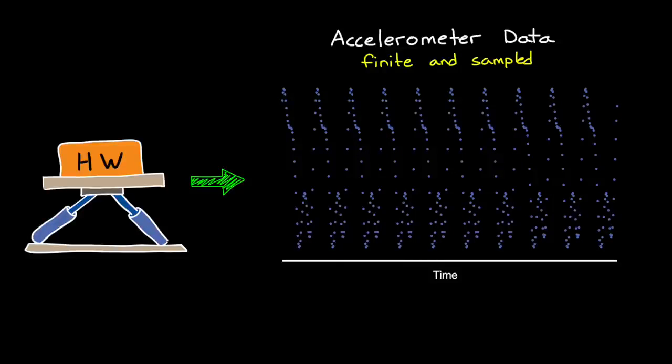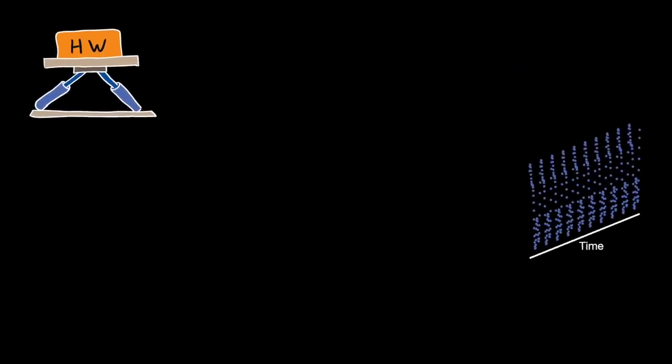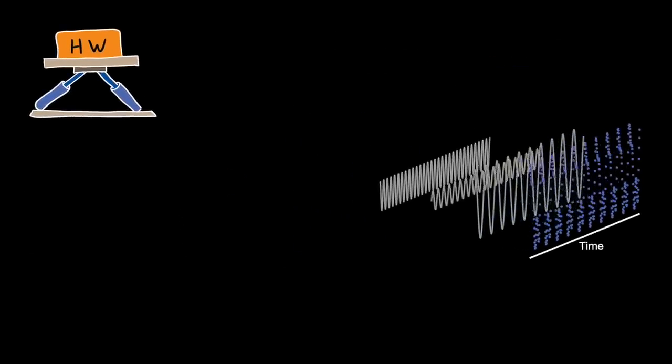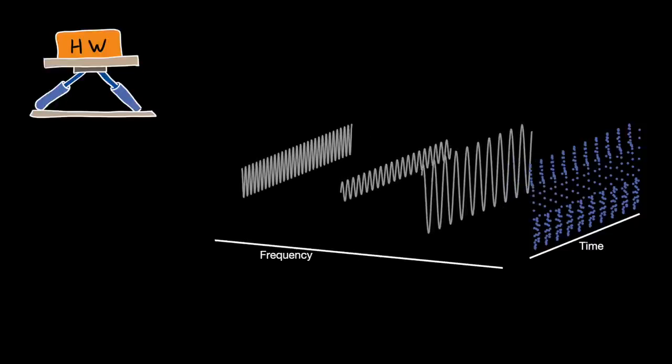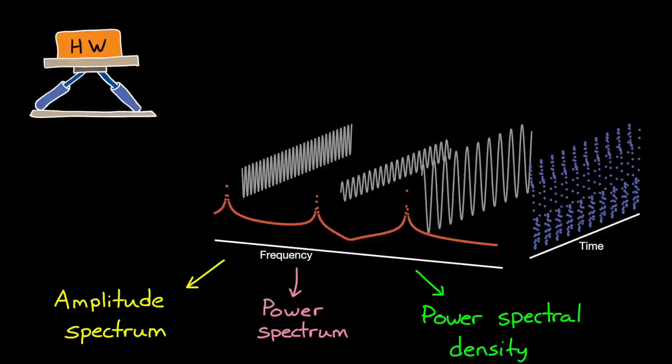In the case of vibrations, as well as many other applications, it's often helpful to look at the spectrum of the signal, that is to separate the time domain signal into the frequency components that make it up. And once we have frequency information, now we might choose to look at the amplitude spectrum, or the power spectrum, or the power spectral density, and each of these provide some insight into the signal that we can't get from the time domain alone.